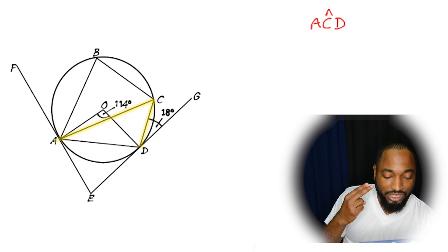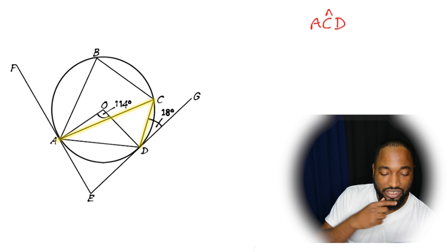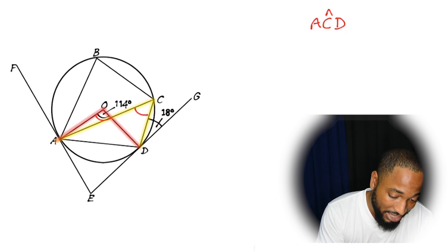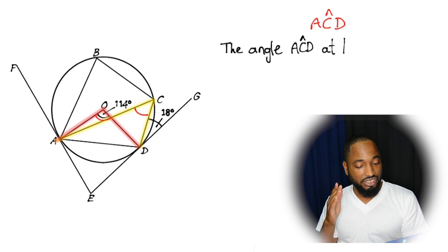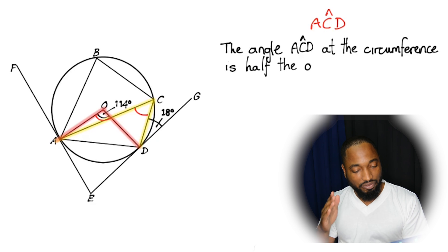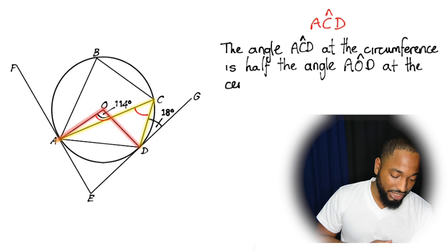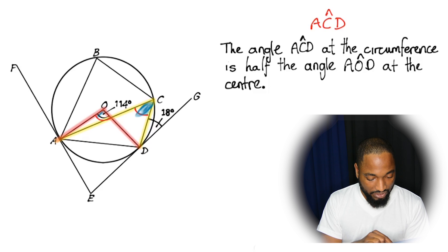Immediately your mind the student needs to run through the catalog of rules and see which rule applies for the situation. And the relationship is this: the angle ACD at the circumference is half the angle AOD at the center. That's a rule check it out in the previous video. That means the angle here must be half of this angle here.